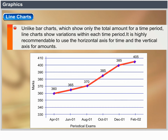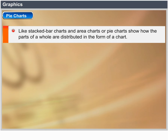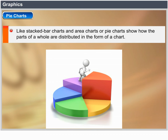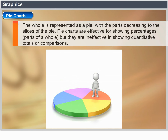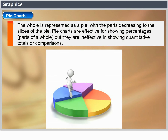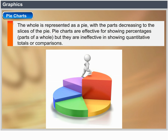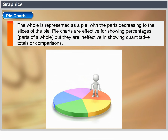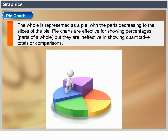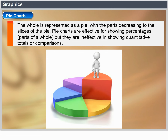Pie Charts. Like stacked bar charts and area charts, pie charts show how the parts of a whole are distributed. The whole is represented as a pie with the parts becoming slices of the pie. Pie charts are effective for showing percentages and parts of a whole, but they are ineffective in showing quantitative totals or comparisons.